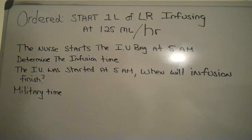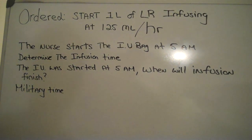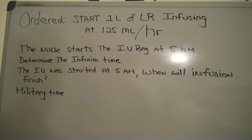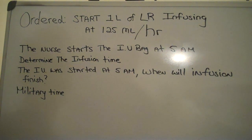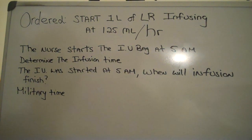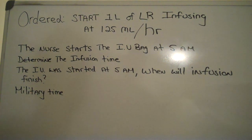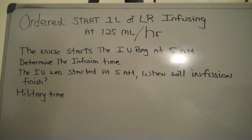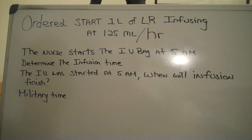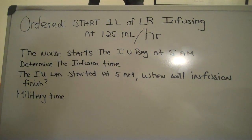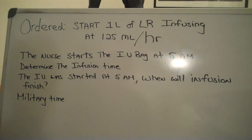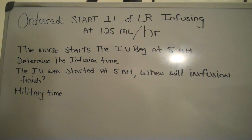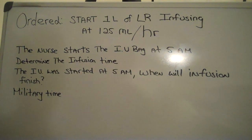Hi and welcome to MedMap for Nurses. Our order: start one liter of lactated ringers infusing at 125 milliliters an hour. The nurse starts the IV bag at 5 a.m. Determine the infusion time.